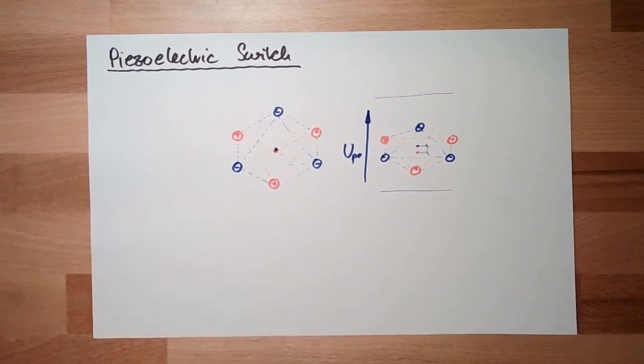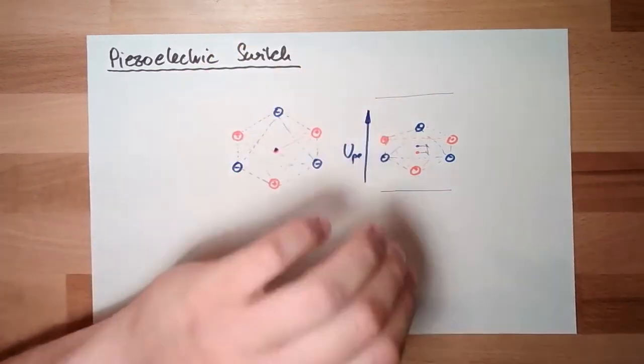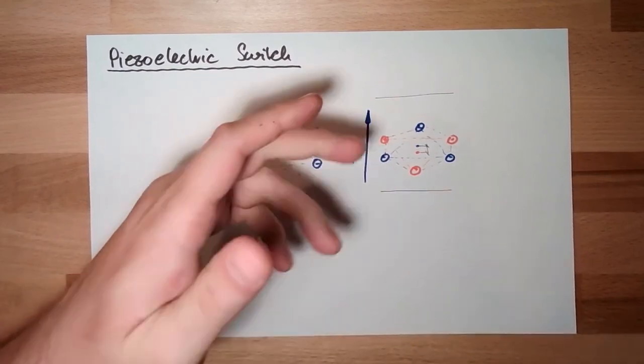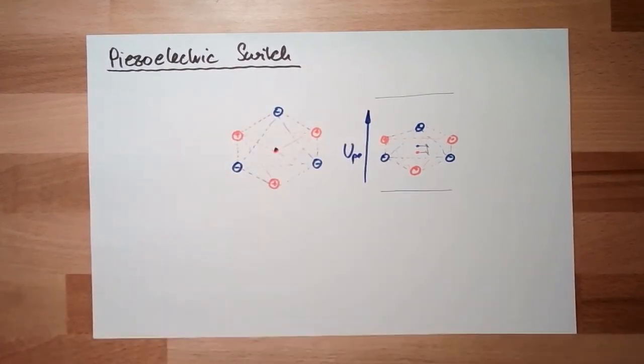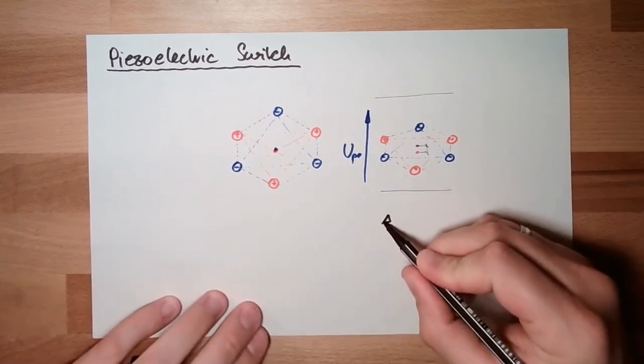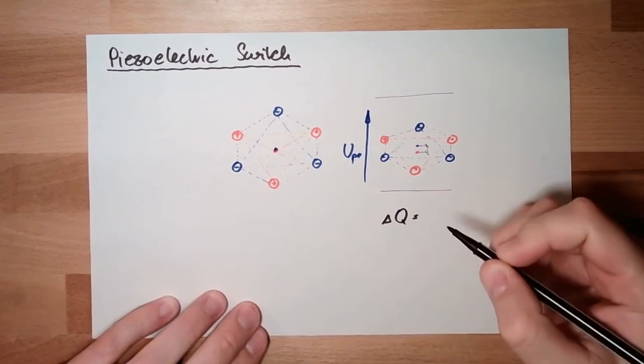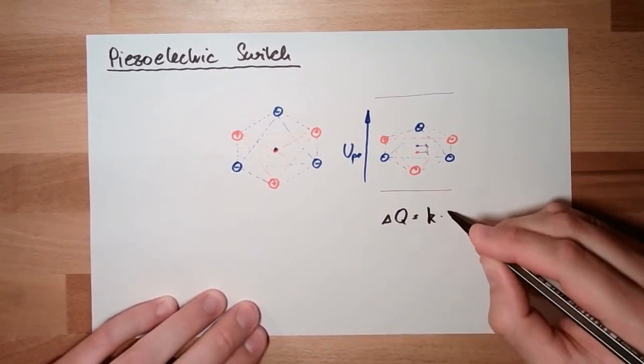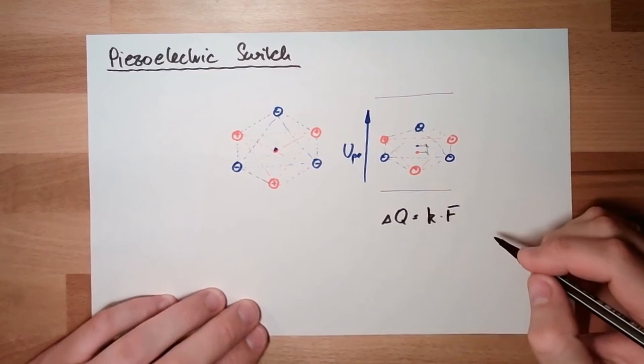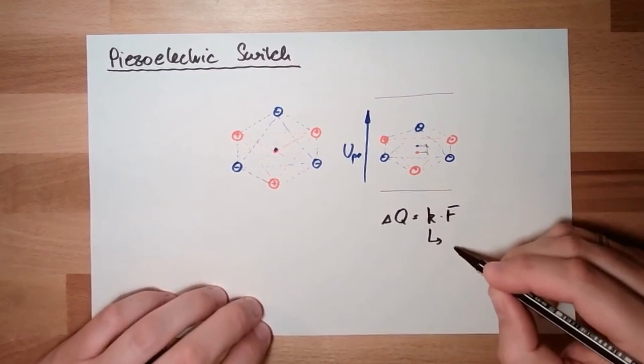Apply some force to piezoelectric material and you will receive voltage. Or since the voltage is very low, we call it charge. The charges will change, and this change of charges is some constant multiplied by the force. This is the piezoelectric constant.